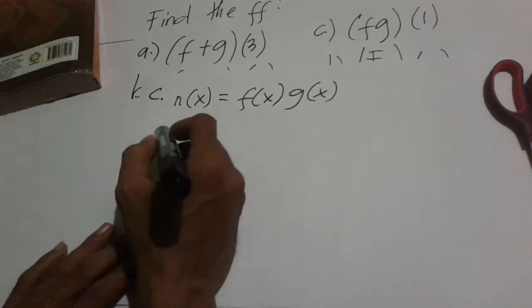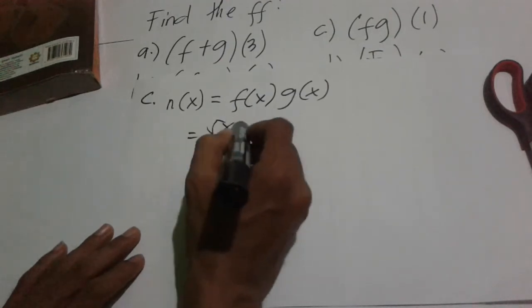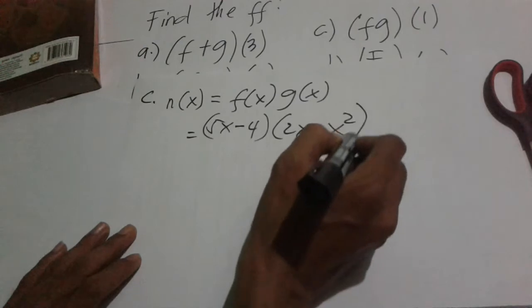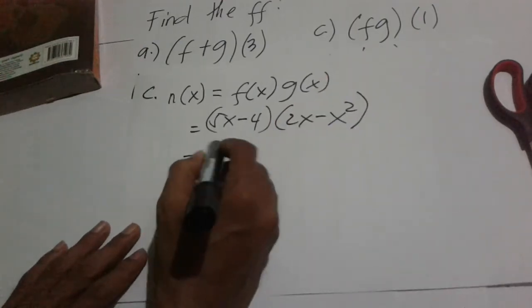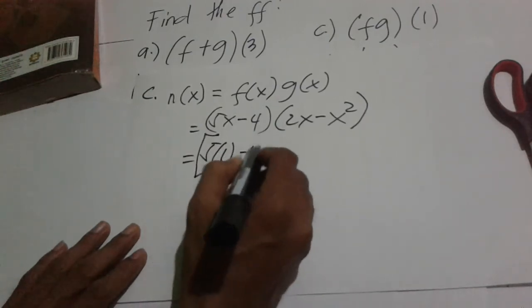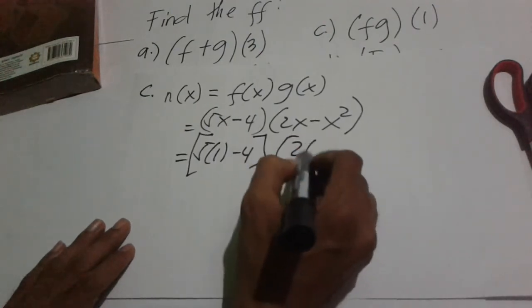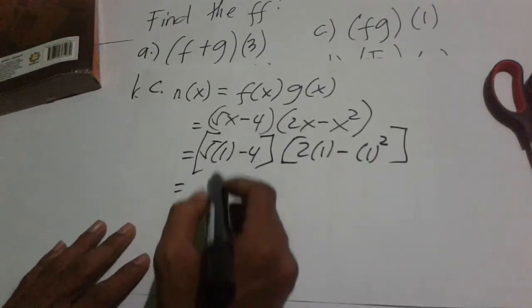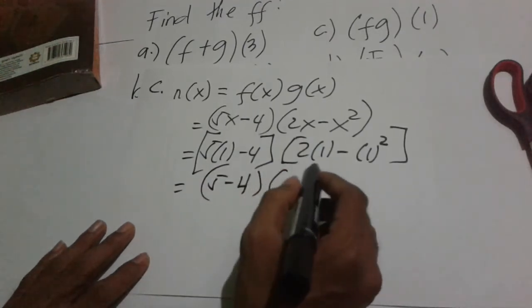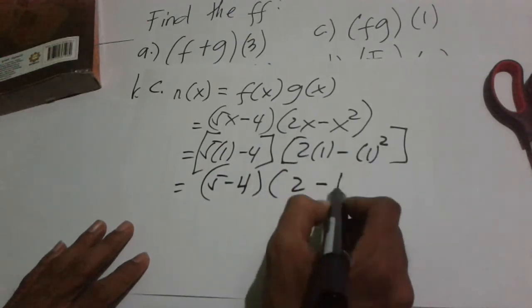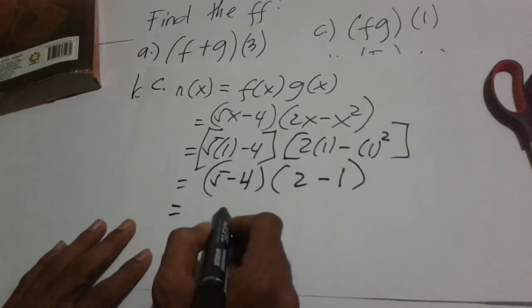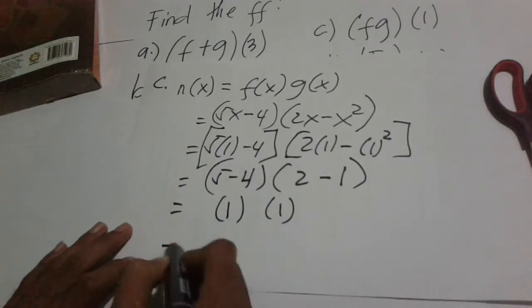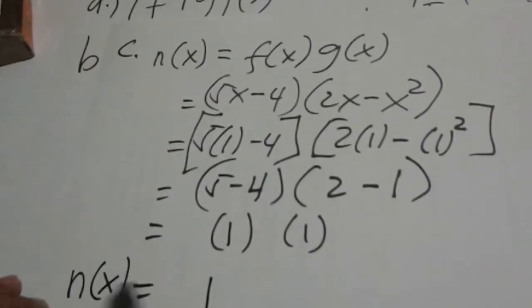Substituting x = 1: (5·1 - 4)(2·1 - 1²) = (5 - 4)(2 - 1) = (1)(1) = 1. So n(x) at x = 1 is equal to 1.